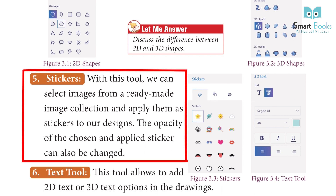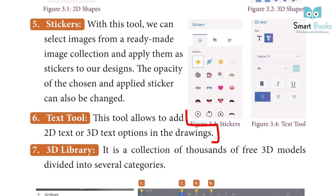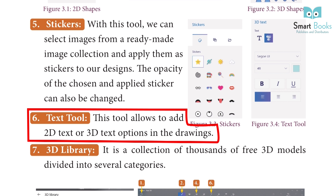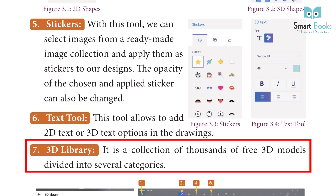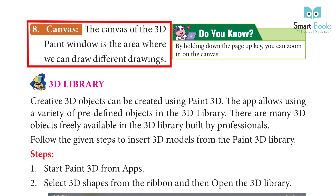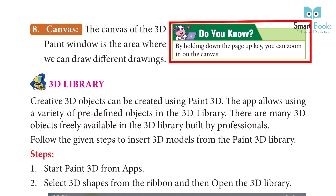5. Stickers: With this tool, we can select images from our ready-made image collection and apply them as stickers to our designs. The opacity of the chosen and applied sticker can also be changed. 6. Text tool: This tool allows you to add 2D text or 3D text options in the drawings. 7. 3D Library: It is a collection of thousands of free 3D models divided into several categories. 8. Canvas: The canvas of the Paint 3D window is the area where we can draw different drawings.